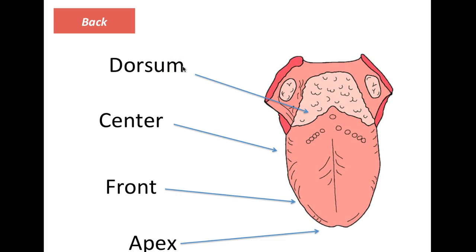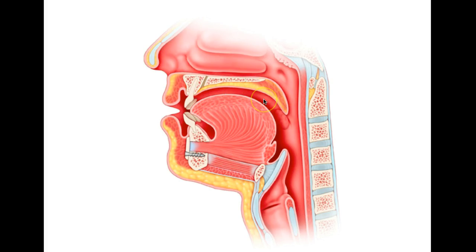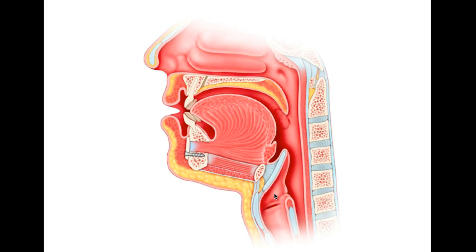With the dorsum of the tongue we produce sounds such as 'K' and 'G.' The dorsum exerts pressure over the air coming from the lungs against the soft palate, thus producing 'G' or 'K.' The difference between these two sounds is that one is voiced and one is voiceless: 'G' is voiced and produces vibration, whereas 'K' is voiceless.